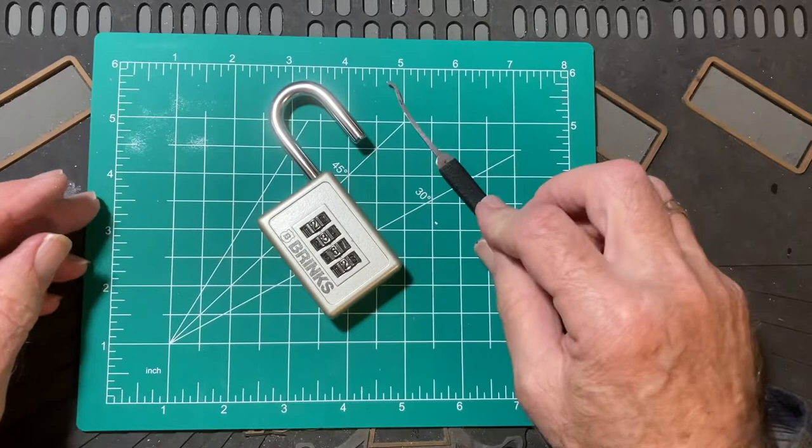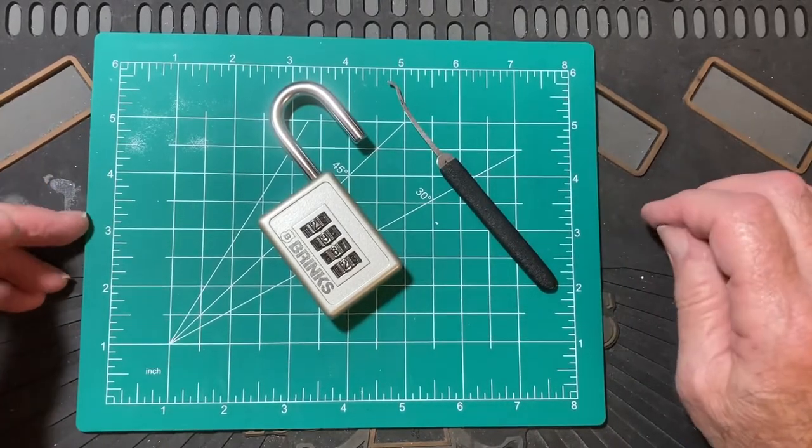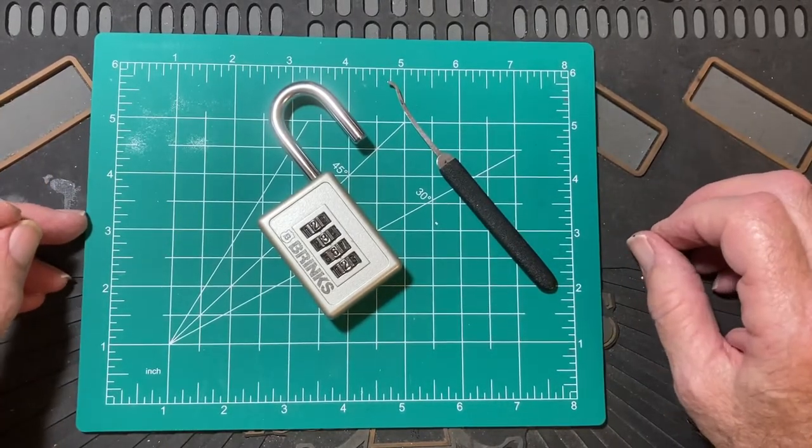So there we have for Quick Pick Thursday how to bypass a Brinks Resettable Combination Padlock. Thanks for watching.